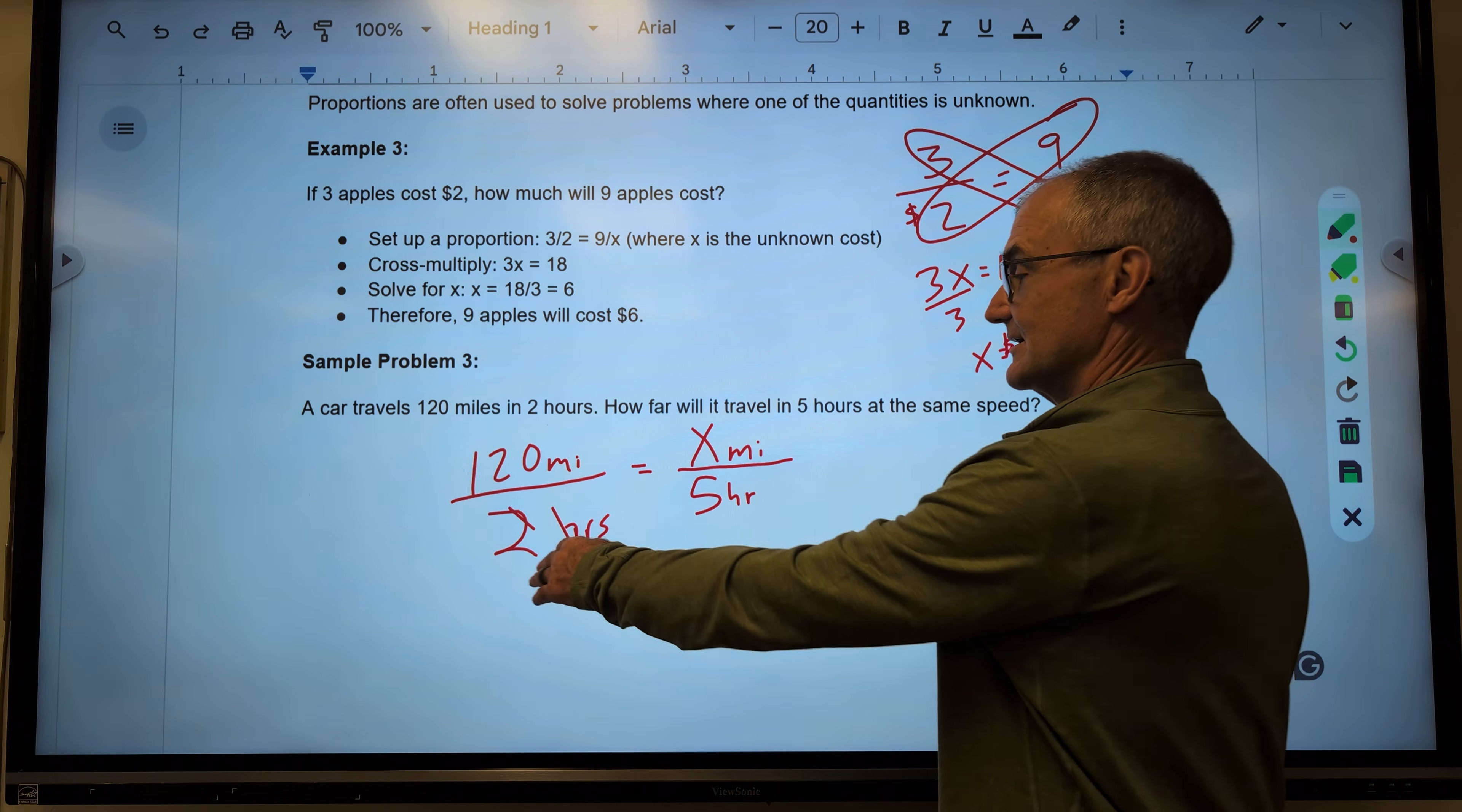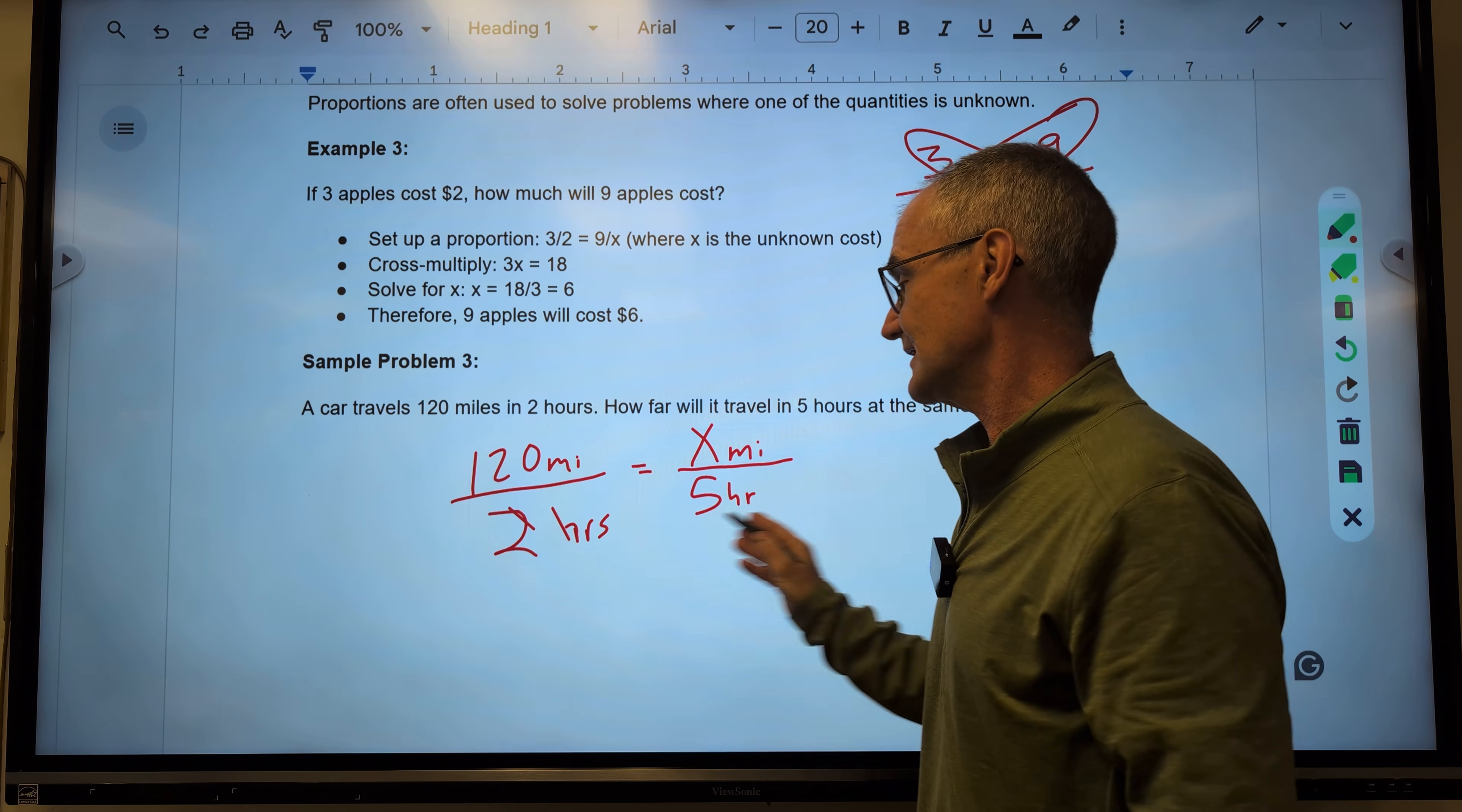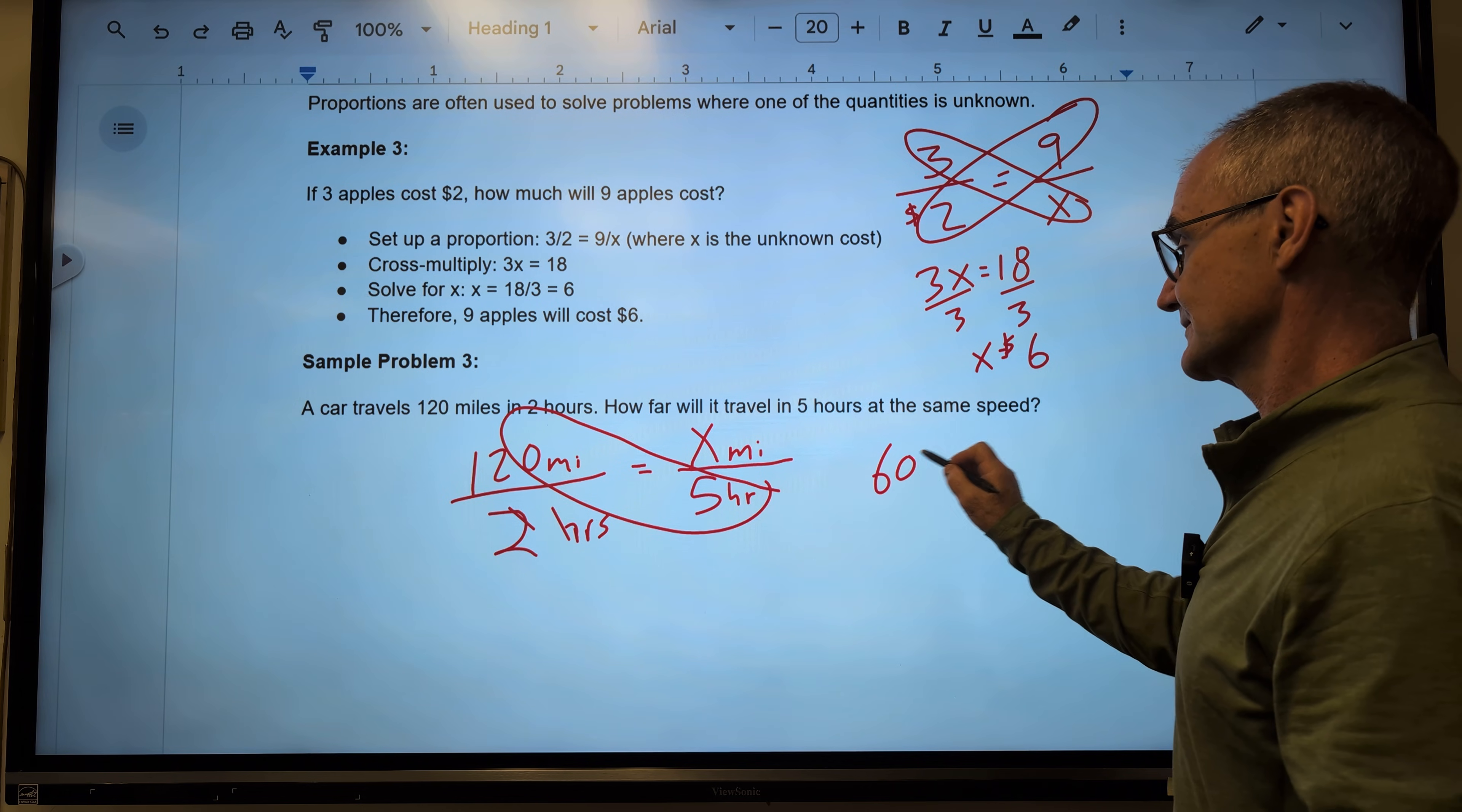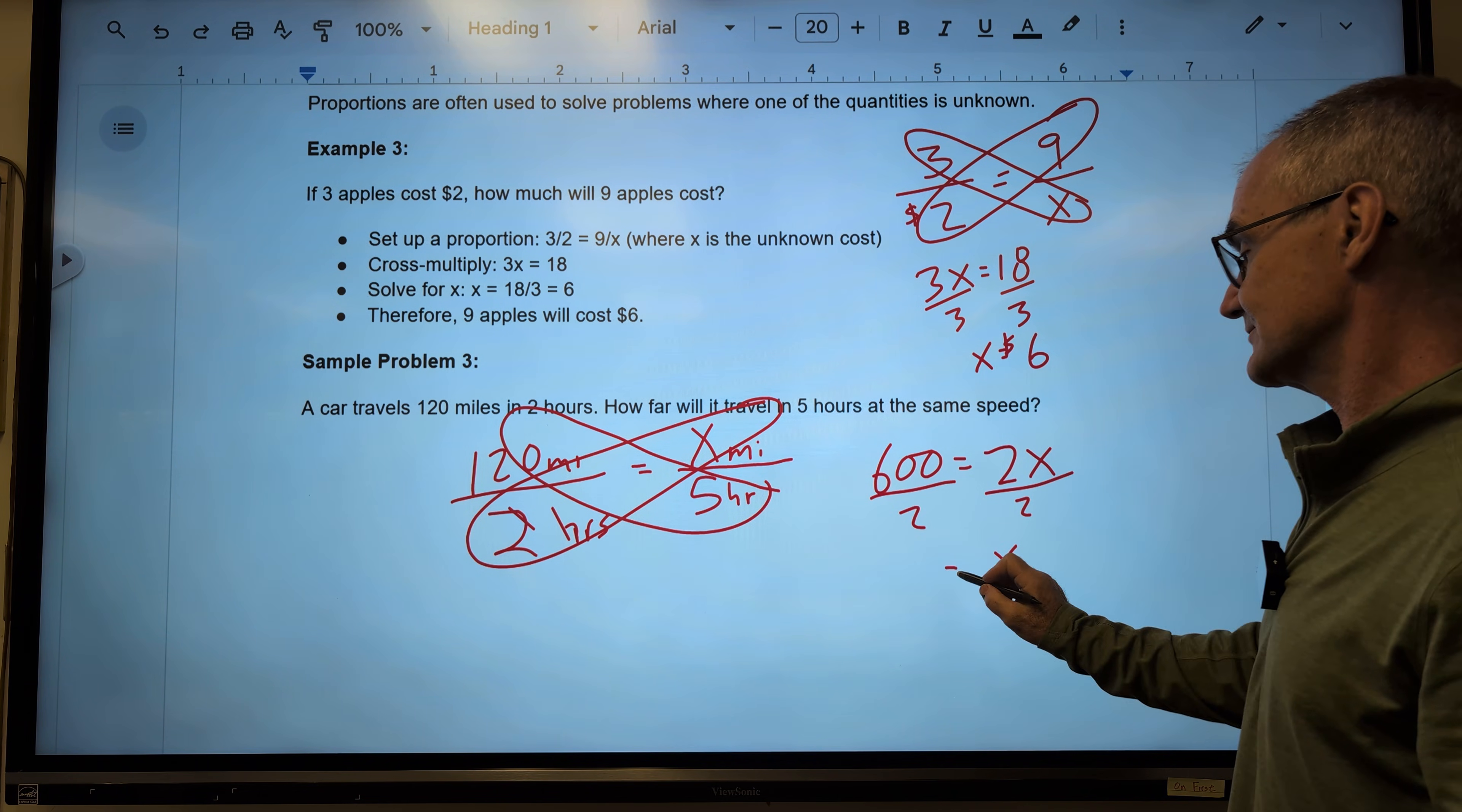So I have hours to hours, miles to miles. I could see this is 2 times 2.5. So this is 120 times 2.5. Or I could cross-multiply. This times this. 5 times 100 is 500. 5 times 20 is another 100. So 600 is equal to x times 2, 2x. Divide both sides by 2. And x is equal to 300.